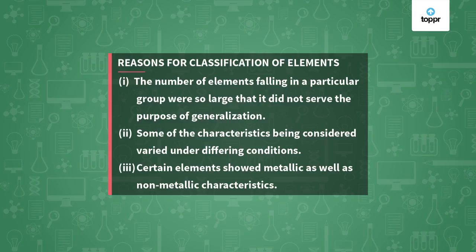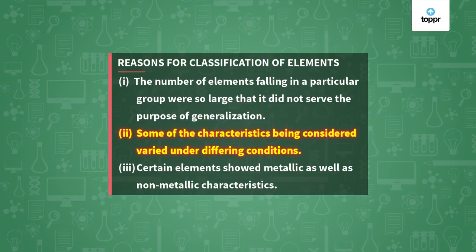Initially, elements were classified based on their physical properties, but none of these early classifications proved to be satisfactory, because the number of elements falling in a particular group was so large that it did not serve the purpose of generalization. Some of the characteristics being considered also varied under different conditions. For example, certain metals cannot conduct electricity at normal temperature, but they can under different conditions. There were also elements that showed both metallic and non-metallic characteristics, so all these reasons did not lead to a satisfactory classification.